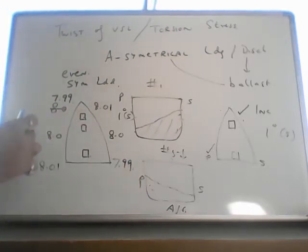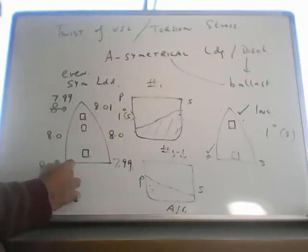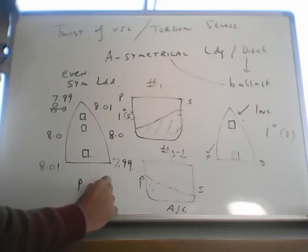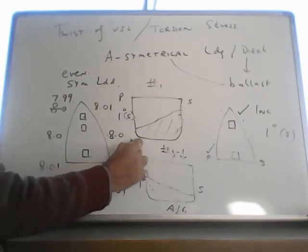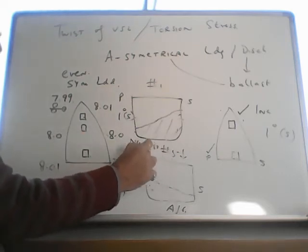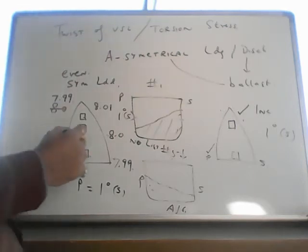So now you see the forward part of the ship is listed to starboard, aft part of the ship is listed to port, let's say 1 degree. So midship area of the ship has no list. This is twisting of the vessel which is not recommended to be done.